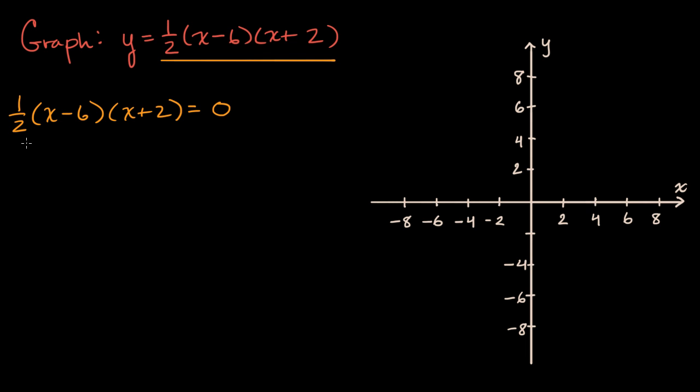It's not going to be equal to zero. But x minus six could be equal to zero. So if x minus six is equal to zero, then that would make this equation true. Or if x plus two is equal to zero, that would also make this equation true. So the x values that satisfy either of these would make y equal zero.